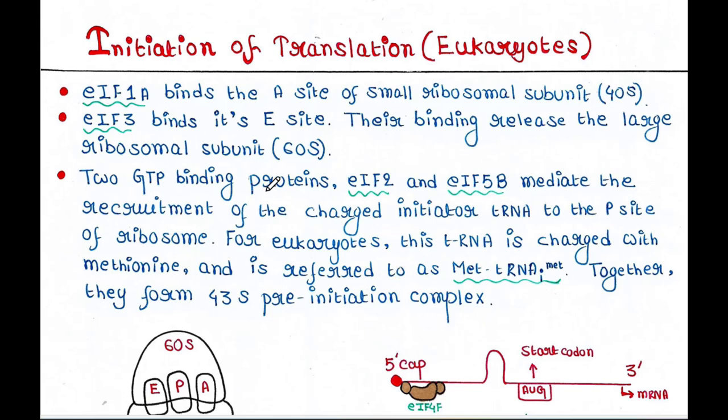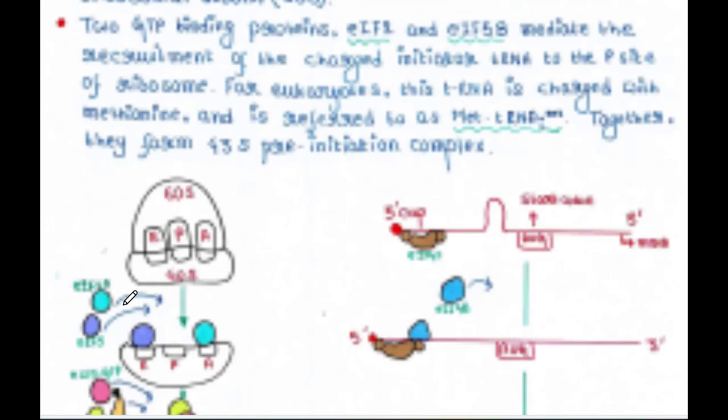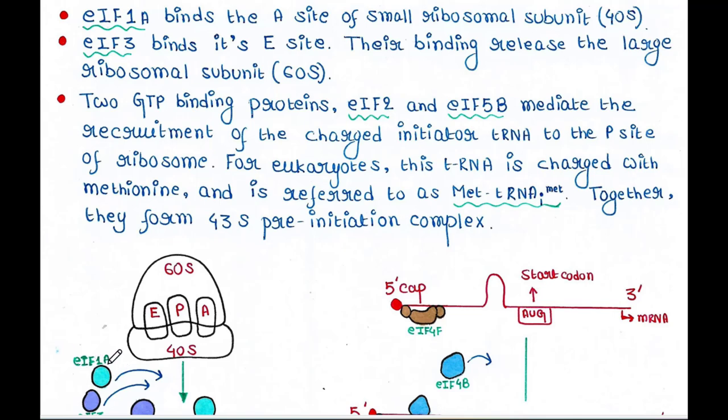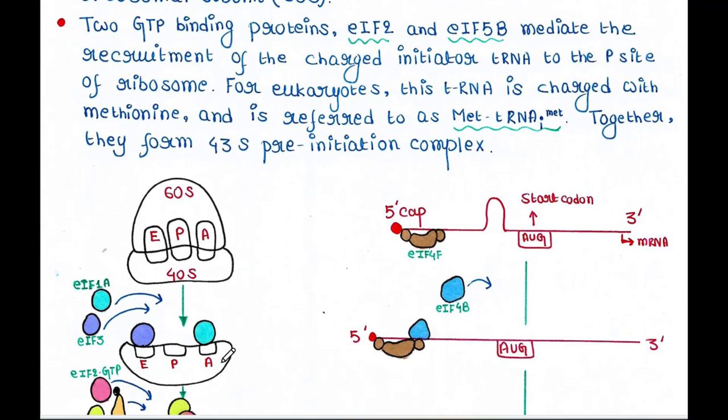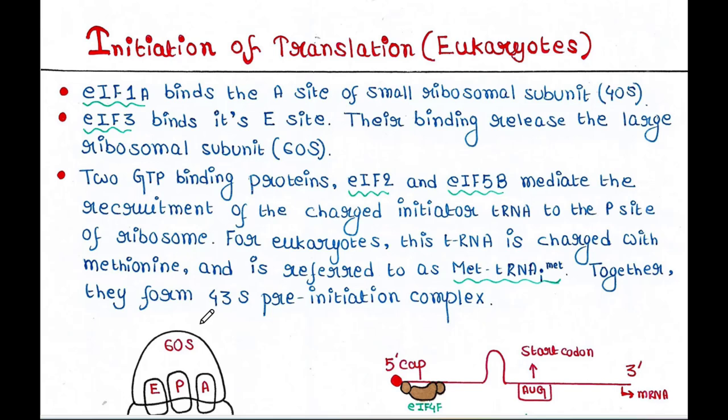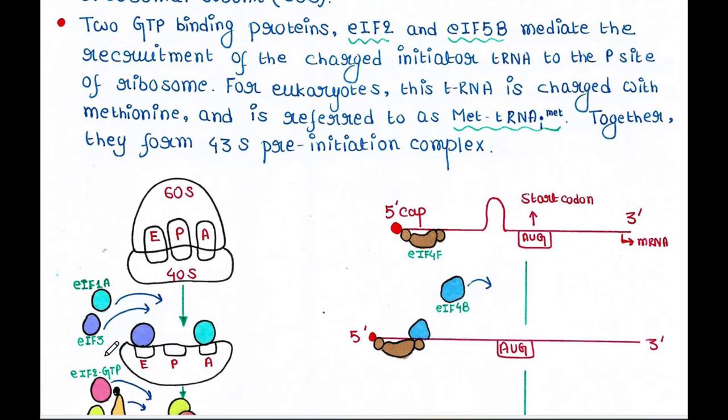The initiation factor eIF1A binds the A site of the small ribosomal subunit. So this is the small ribosomal subunit. At the A site, this initiation factor 1A binds, and initiation factor eIF3 binds its E site.